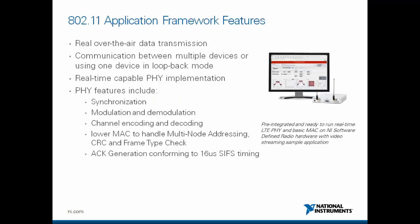Here is a summary of the high-level features of the 802.11 application framework. It offers real over-the-air data transmission. You can have communications between multiple devices or using one device in a loopback mode. We have a real-time capable PHY implementation, so the signal field of the received Wi-Fi packet determines the decoding of the data field. The PHY features include synchronization, modulation and demodulation, and channel encoding and decoding.